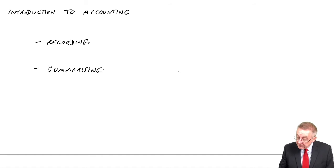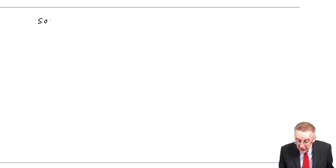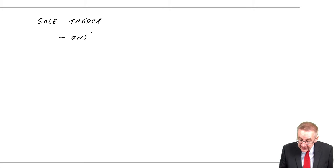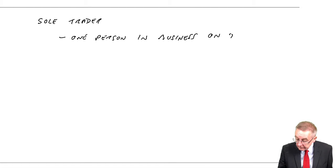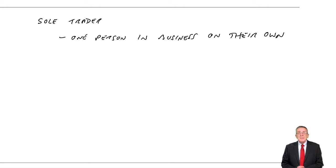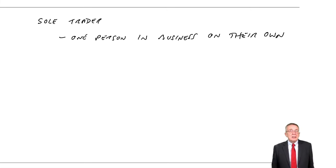Over the page, it says types of business entity. There are two main types that you need to be aware of. First of all, a sole trader — and what a sole trader is, it's one person in business on their own. Nothing to do with limited companies or anything. It's one person in business on their own.